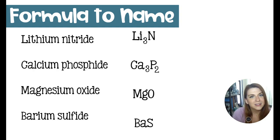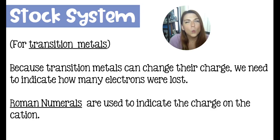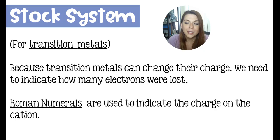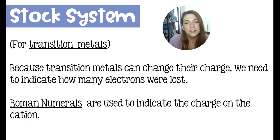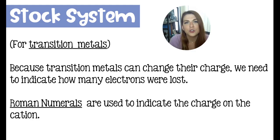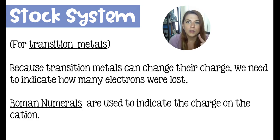Now let's talk about transition metals — they have one extra rule when naming. It's called the Stock system. We add a Roman numeral to indicate the charge on the metal ion when it crisscrossed. The reason is that transition metals can rearrange their inner electrons to change the number of valence electrons they bond with. If I told you copper was bonding to chlorine, there's no way to know how many electrons are exchanged — sometimes copper gives away one electron, other times two. That's why we need the Roman numeral.